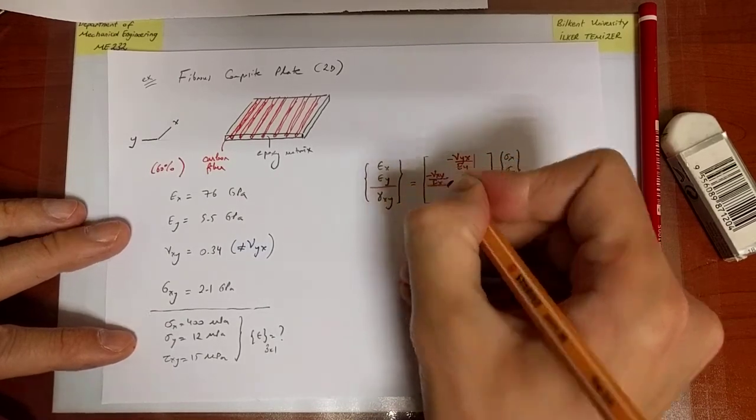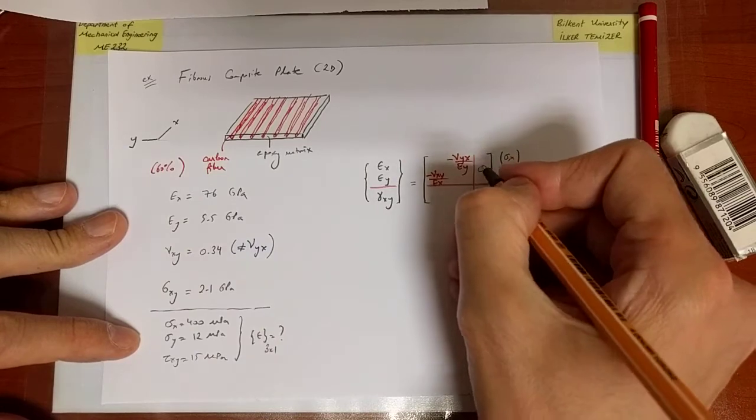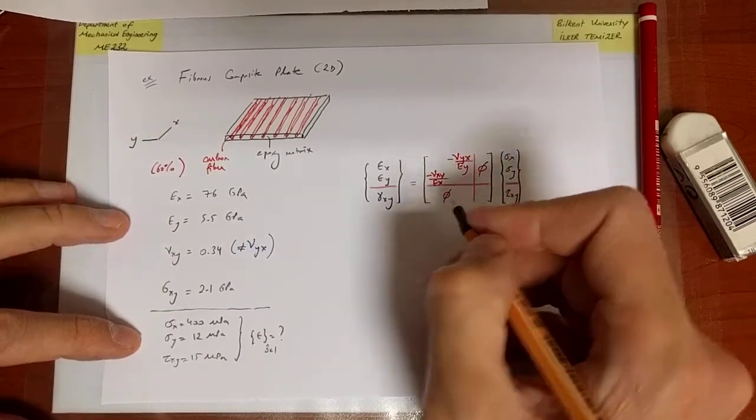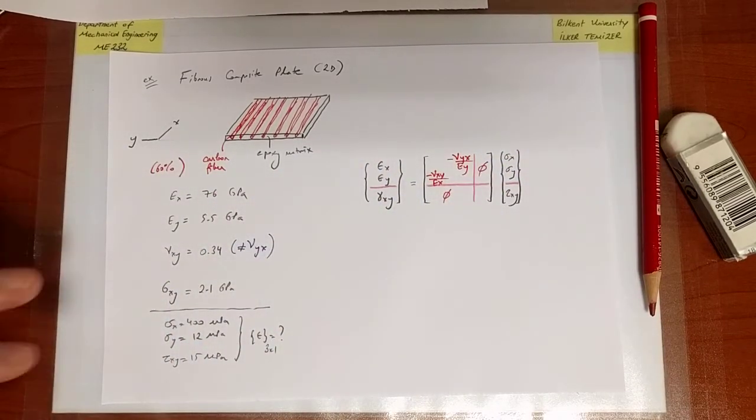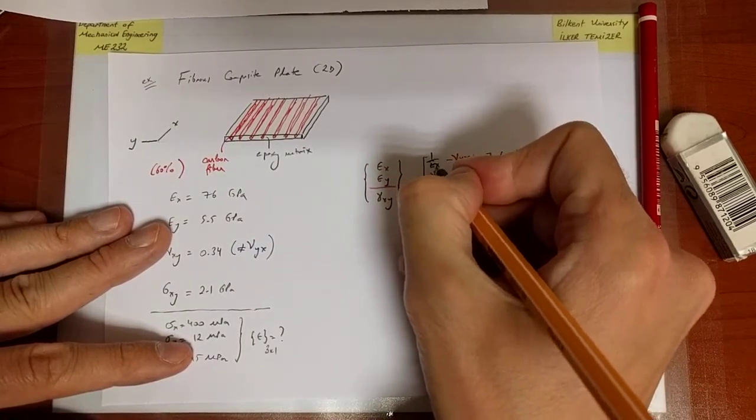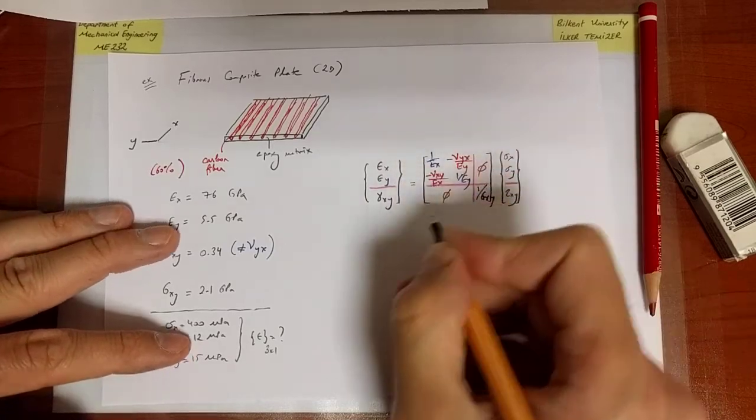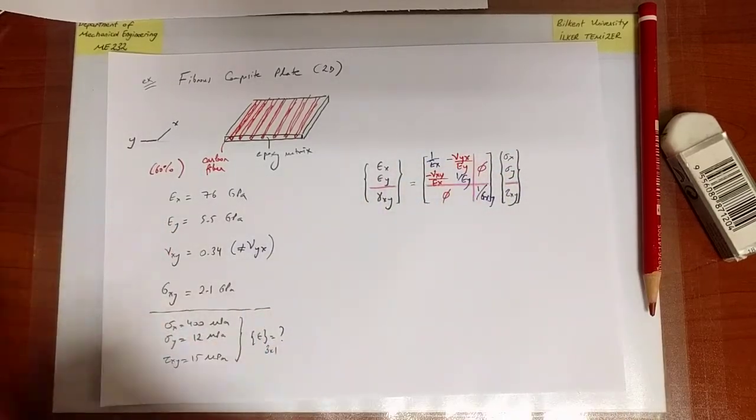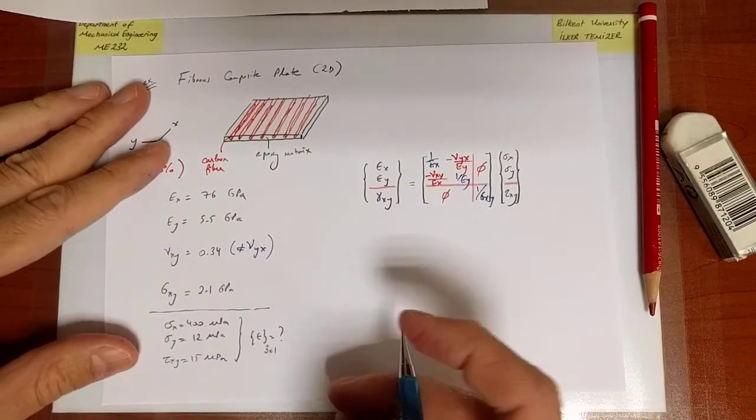Here what we'll go is simply minus nu_yx over Ey and here I will have minus nu_xy over Ex. Those are the off-diagonal components. Here I have zeros and here I have 1 over Gxy, here 1 over Ex and 1 over Ey. That's the way the equation looks now.